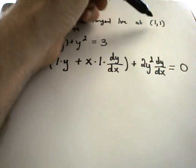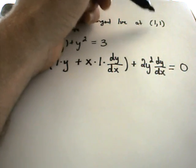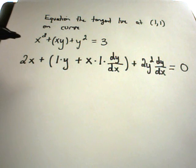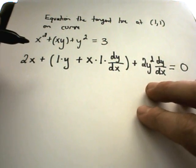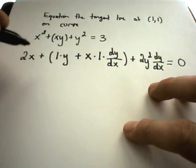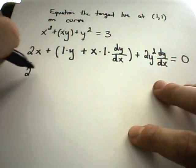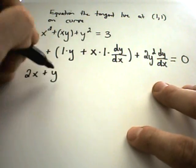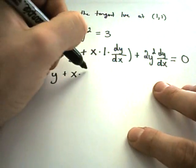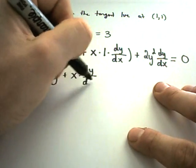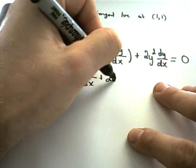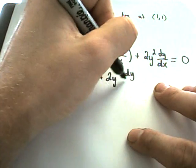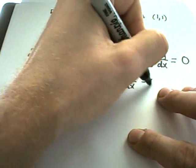Okay, so, you could actually plug in your point (1,1) here and solve for dy/dx. But, I'm going to go ahead and solve for dy/dx just to kind of practice that algebra anyway. So, on the left, we'll have 2x plus y plus x dy/dx plus 2y dy/dx equals 0.